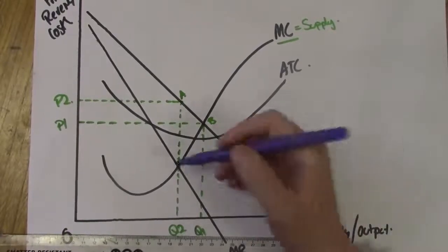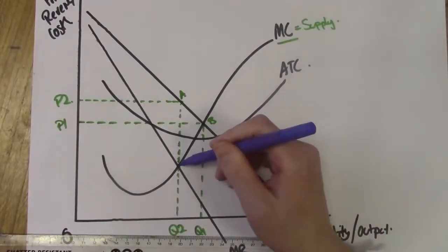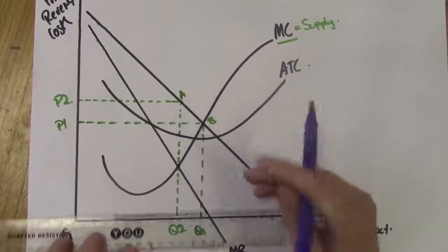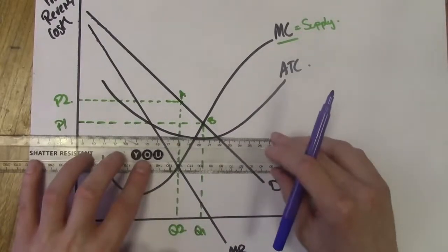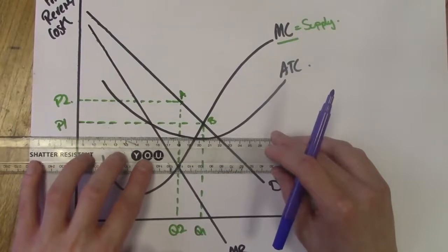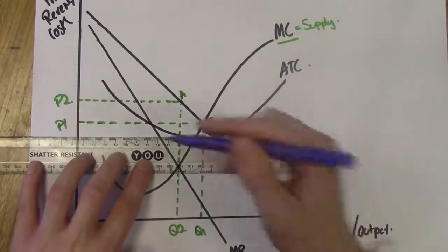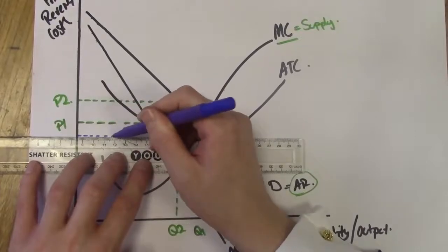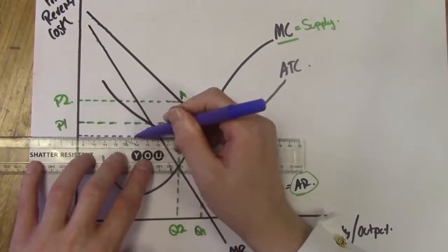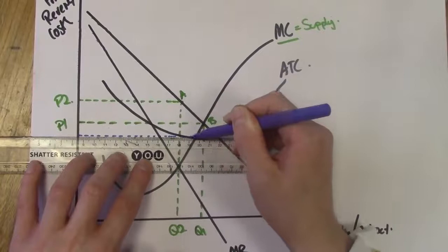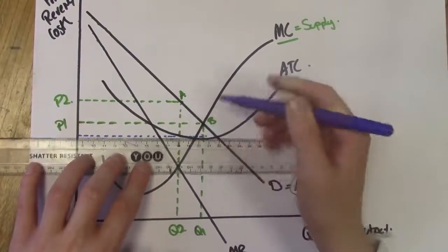The firm is not really interested in the needs of society — it's interested in making money. So where is it making money on this diagram? Again, from MR equals MC, move up until you meet the point where the dashed line for the price level hits the ATC curve.